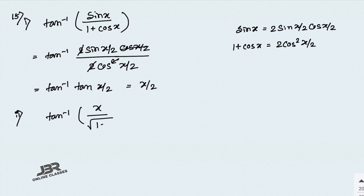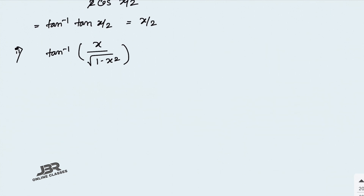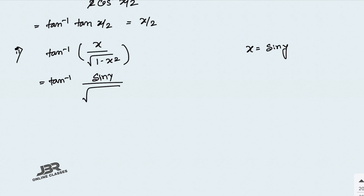Number 2: tan inverse of x divided by root of (1 minus x²). Let x equal sin y. So we write tan inverse of sin y divided by root of (1 minus sin²y).